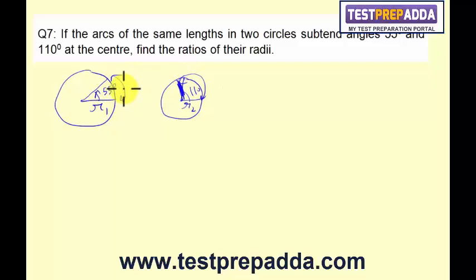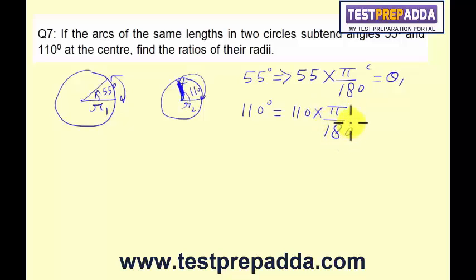First of all, angles should be in radians. So 55 degrees will be converted into radians: 55 into π by 180 radians. This is theta one. Now similarly, 110 degrees will be converted into radians: 110 into π by 180 radians. This is theta two.